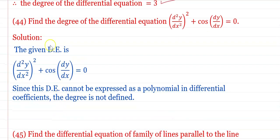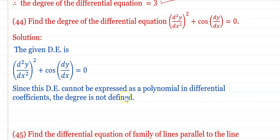Find the degree of the differential equation (d²y/dx²)² + cos(dy/dx) = 0. Since the equation cannot be expressed as a polynomial in the differential coefficients, the degree is not defined.